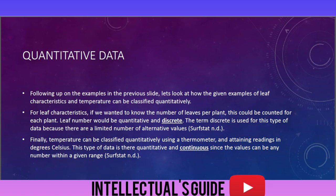The term discrete is used for this type of data because there are a limited number of alternative values. Finally, temperature can be classified quantitatively using a thermometer and attaining a reading in degrees Celsius. This type of data is quantitative and continuous, since the value can be any number within a given range.